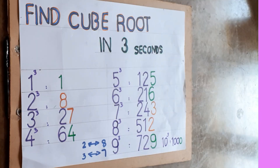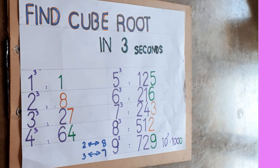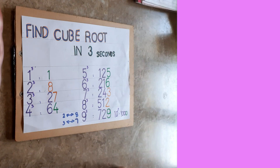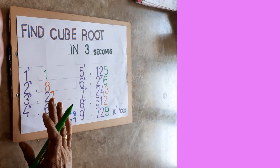Hello everyone, welcome back. Today's topic is finding cube root within three seconds — how fast you can do it for your competitive exams. You can save time and do it faster compared to square root. This is more easier than square roots. I did square roots and cubes in my last videos; if you have not seen, you can watch those. Now, finding cube root — first you should know 1 to 10 cubing.